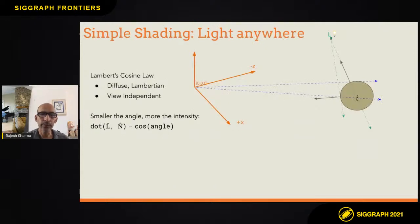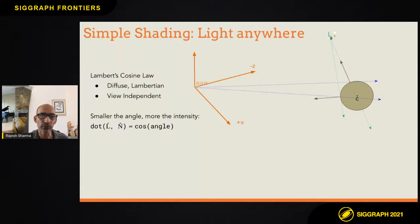Then we moved on to doing simple lighting. Initially we had our light as a headlight at the origin — our viewpoint is at the origin as well. Then we said we can have the light anywhere. What we do is use the angle between the normal at the hit point and the light location to figure out whether the point is in the light or not, and depending on that angle we choose the intensity of the light. That gives a nice diffuse effect.